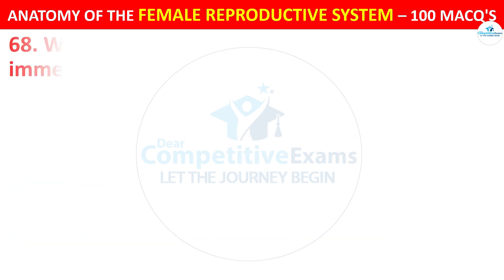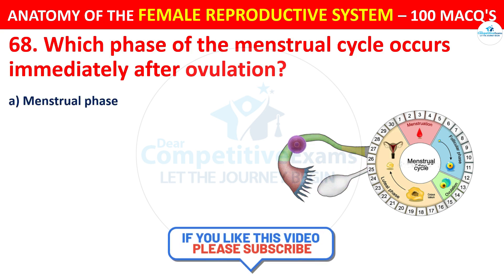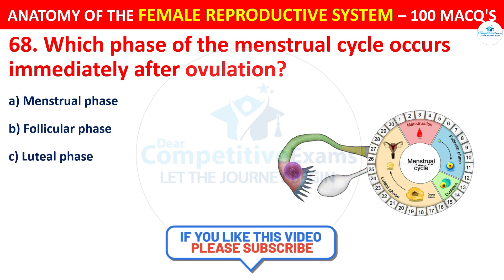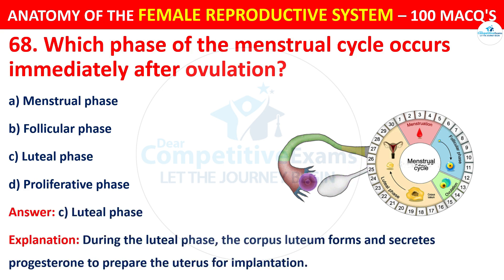Question number 68. Which phase of the menstrual cycle occurs immediately after ovulation? Options: menstrual phase, follicular phase, luteal phase, or proliferative phase. The correct answer is C — the luteal phase. During the luteal phase, the corpus luteum forms and secretes progesterone to prepare the uterus for implantation.